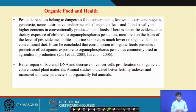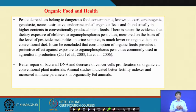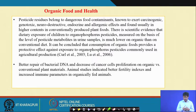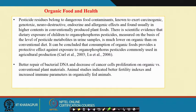Pesticide residues are dangerous food contaminants having carcinogenic, genotoxic, neurodestructive, endocrine-disrupting, and allergenic effects, found usually in higher content in conventionally produced plant foods. Most pesticide residues are higher in conventionally produced food compared to organic food. Scientific evidence shows that dietary exposure of children to organophosphorus pesticides, measured through pesticide metabolites in urine samples, is much lower in organic than on conventional diets. Consumption of organic foods provides a protective effect against exposure to organophosphorus pesticides commonly used in agricultural production.